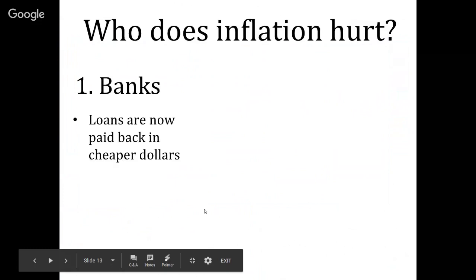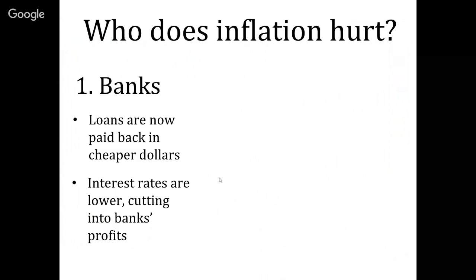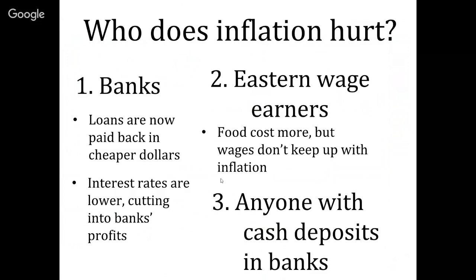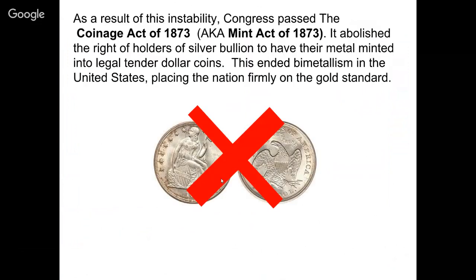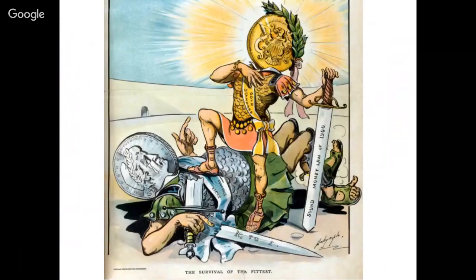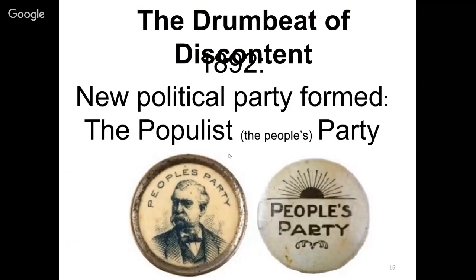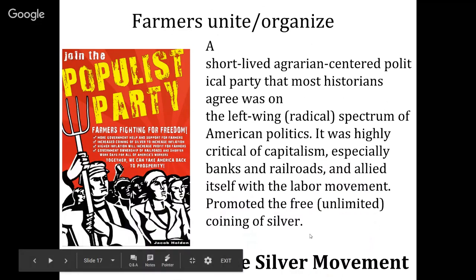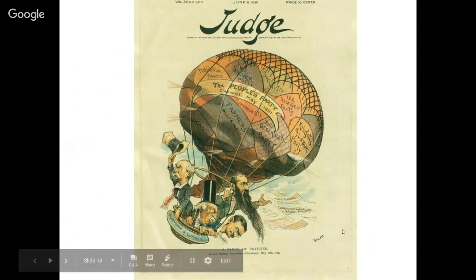So who does inflation hurt? It hurts banks, because now loans are paid back with cheap money and interest rates are lower, cutting into profits. It hurts eastern wage earners because food costs more but wages don't keep up with inflation. And it hurts anyone with cash deposits in the bank. The Populist, or People's Party: a short-lived agrarian-centered political party that historians agree was on the left-wing, radical spectrum of American politics. It was highly critical of capitalism — especially banks and railroads — allied itself with the labor movement, and promoted free and unlimited coinage of silver. They're silverites. They want silver because they want inflation.